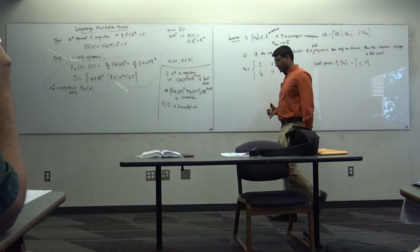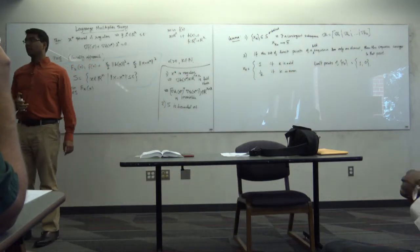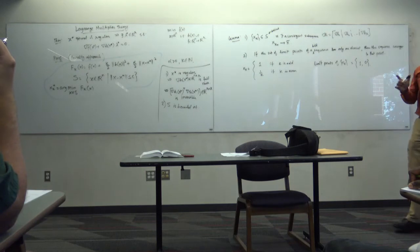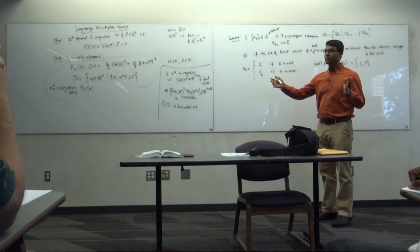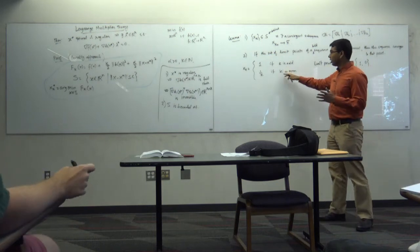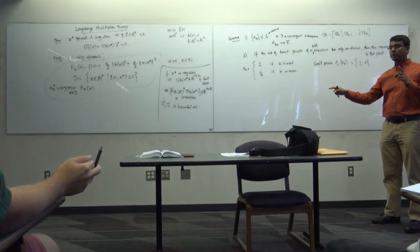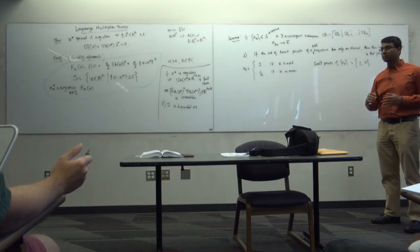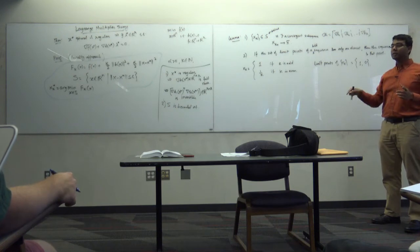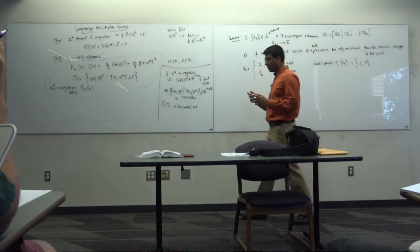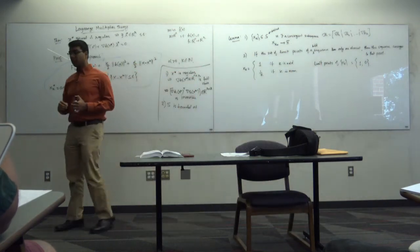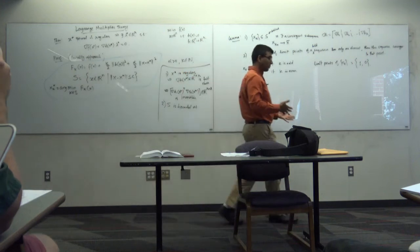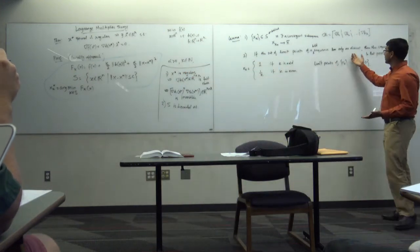Point 2 is saying more: if the set of limit points has only one element, then the sequence converges to that one point. It's a stronger result — you start with a sequence you don't even know converges, and you prove it actually converges because the set of limit points has only one element.